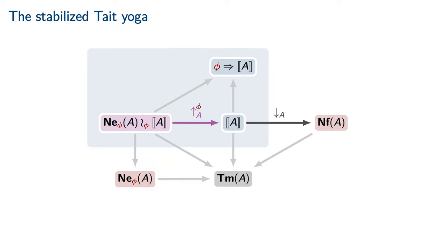The reflection of a stabilized neutral must restrict on its frontier of instability to the partial computability data that was glued onto it. All types are indeed closed under this stabilized Tait yoga, leading immediately to the normalization result for cubical type theory.